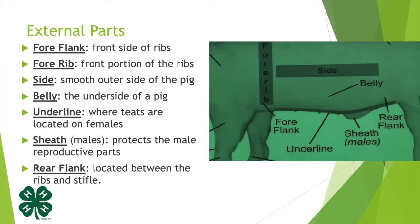Next we're moving up to the body of the pig. The foreflank is the front side of the ribs. The fore rib going up the side here is the front portion of the ribs. The side is the smooth outer side of the pig, and the belly is the underside of the pig.